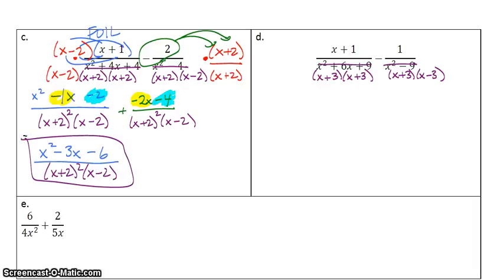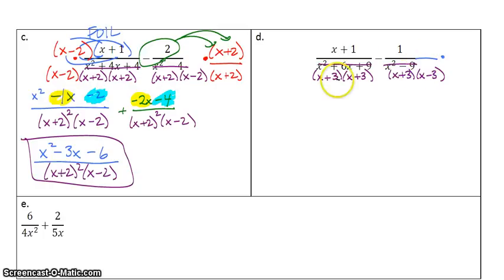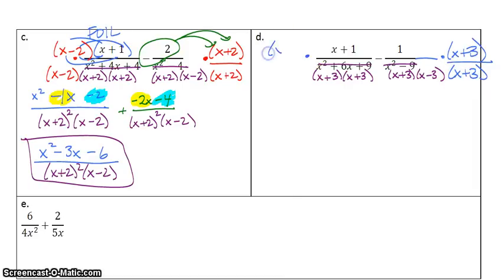Let's look at d. We already did one of the hard parts, which was factoring it. I specifically made this problem very similar to c so that you could have some extra practice. Think about what does this right fraction need that the left one has but it's lacking. Notice the left one has x plus 3 twice, so I need another x plus 3 here to make it match. For the right one, I need another x minus 3.